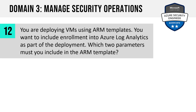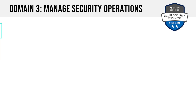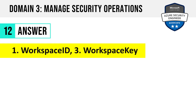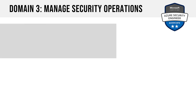Number 12. If you're deploying VMs using ARM templates and you want to include enrollment into Azure Log Analytics as part of the deployment, which two parameters must you include in the ARM template to automate that Log Analytics enrollment? Workspace ID, access key, workspace key, or workspace name? The answer is one: Workspace ID, and three: workspace key. You'll need to provide the Log Analytics Workspace ID and workspace key for the VM extension that deploys the agent.